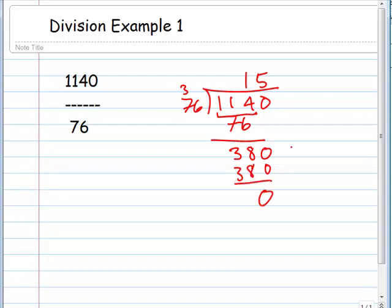Okay, it worked out perfectly. If that didn't work out, then we would have had to change the 5 into another number. But in this case, it looks like 1140 divided by 76 is equal to 15.